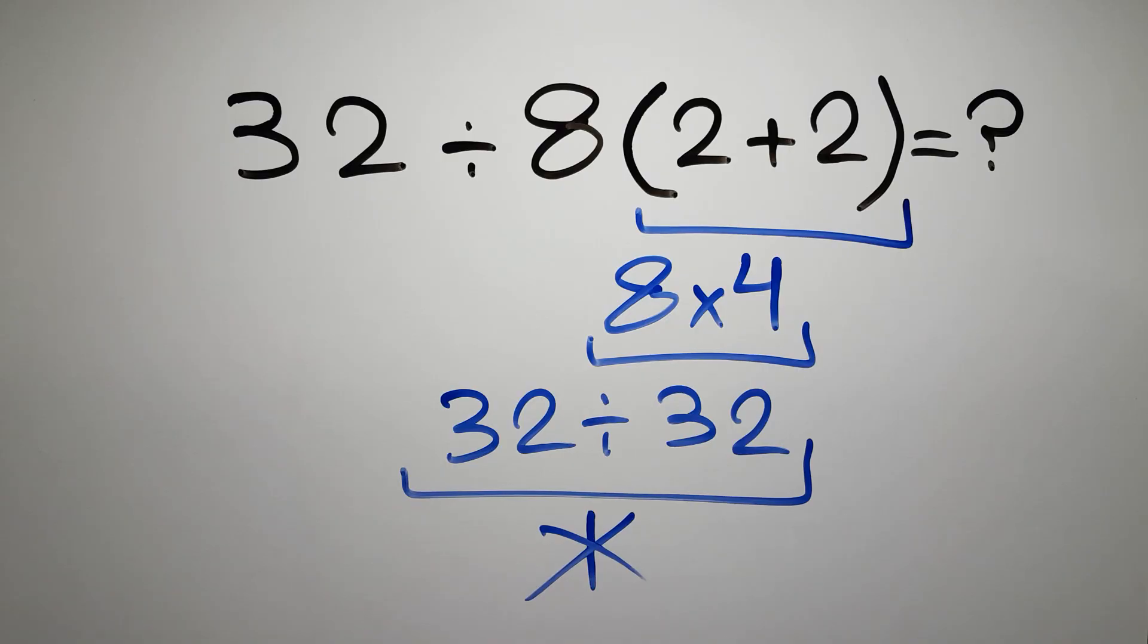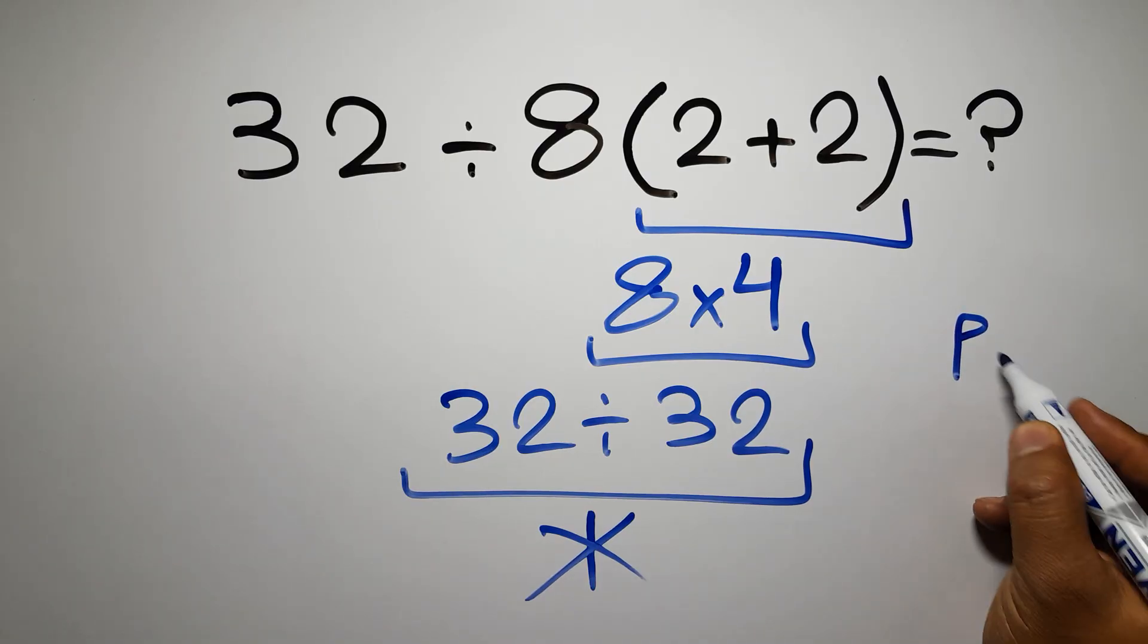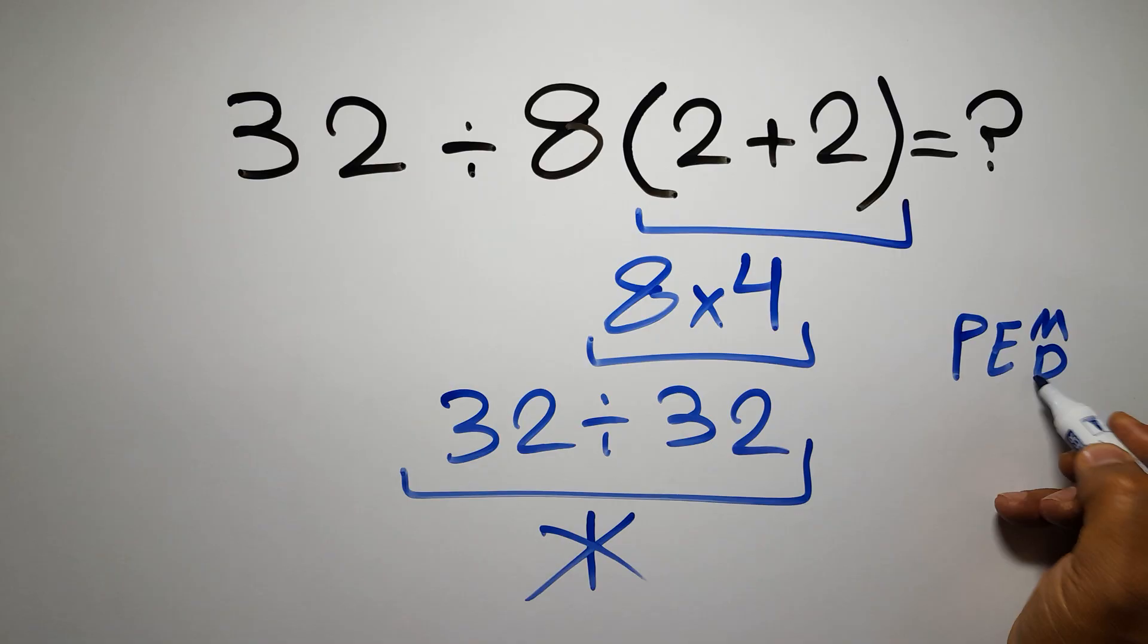Because according to the order of operations, first we have to do parentheses, then exponents, then multiplication or division.